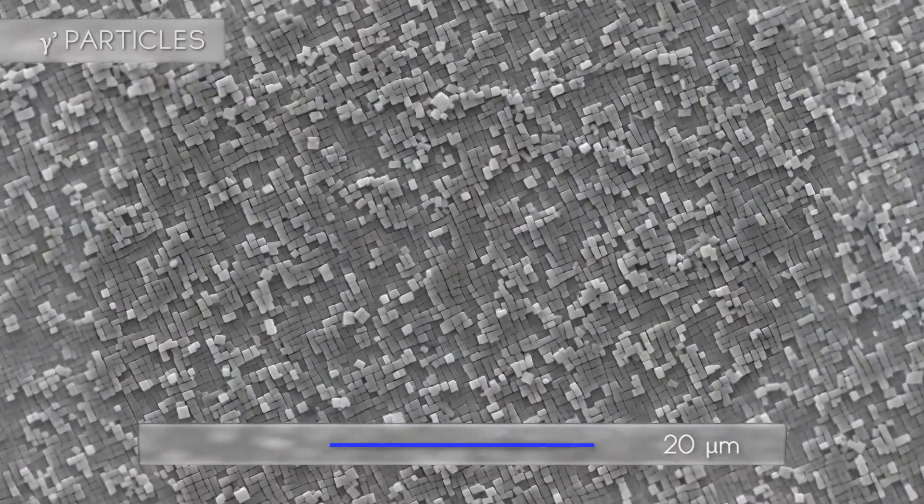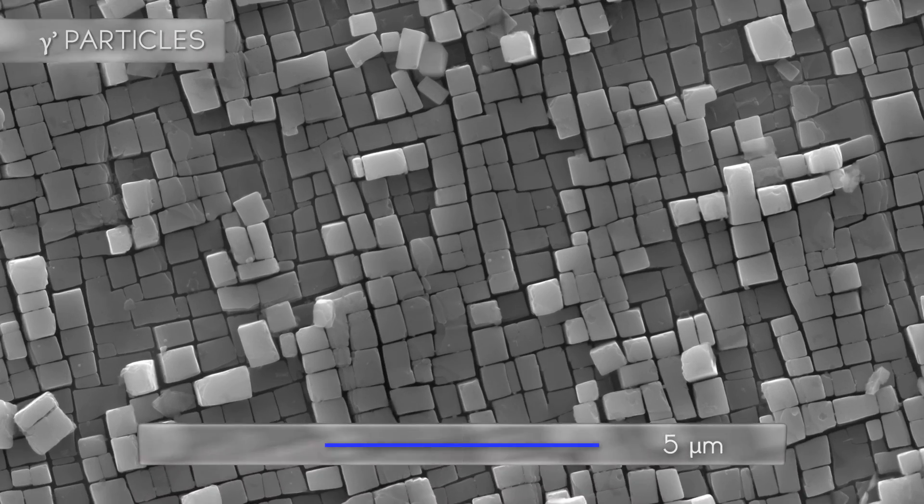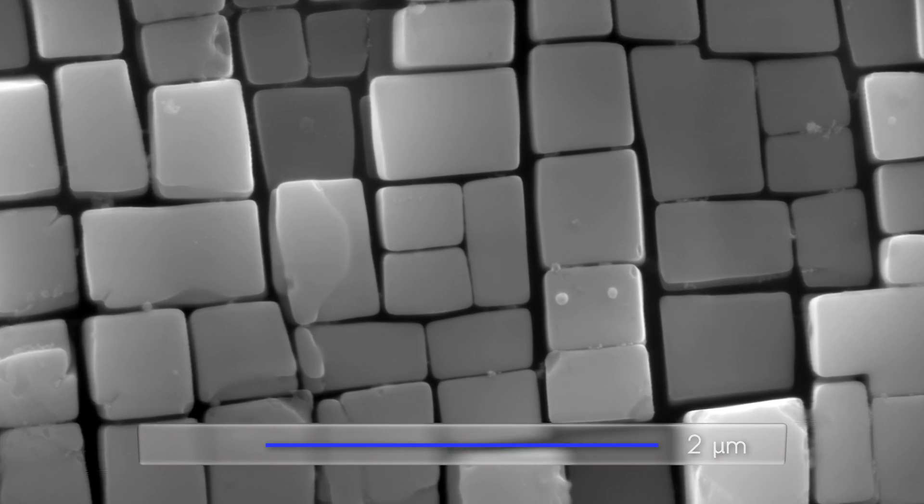We zoom in further and start recognizing little cuboidal particles. These are gamma prime particles which consist of the ordered L12 phase. They fill about 80% of the volume of our material.